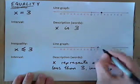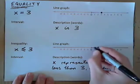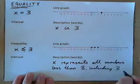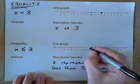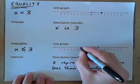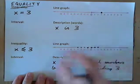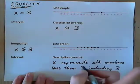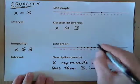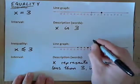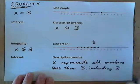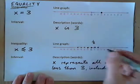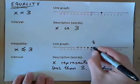x represents 2, 1, 0, negative 1, negative 2, negative 3, negative 4 — for all these numbers. Does x also represent 1/2? Well, 1/2 is less than 3, so yes it does.